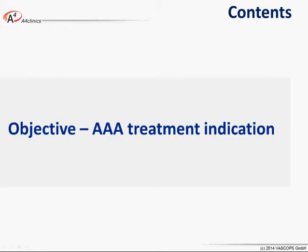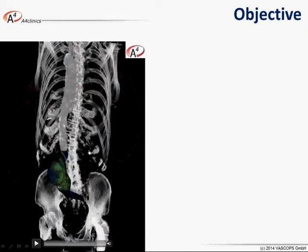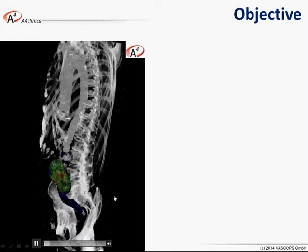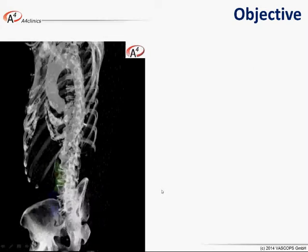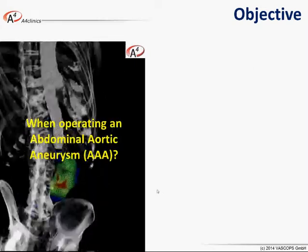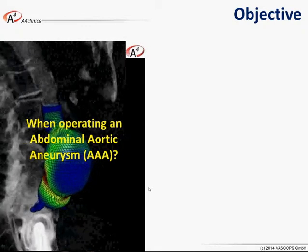Now let's start with the objective, and I think the objective is very clear to you. This is how the aorta is supposed to look like. However, in quite a few patients we will find aneurysms, and then the big question is when we should operate on this aneurysm.